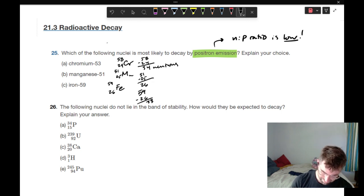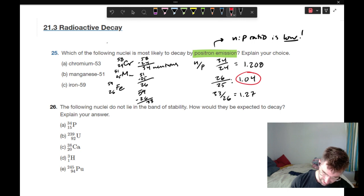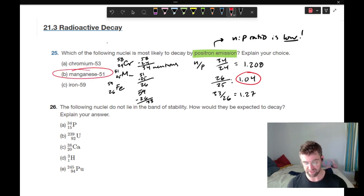This is our neutrons now that we're solving for. And 59 minus 26 equals 33 neutrons. So to figure out our ratio, we simply divide neutrons by protons. So for chromium, we have 34 divided by 24, and that's going to give us about 1.208. For manganese, we've got 26 divided by 25 neutrons by protons, and that gives us 1.04. And here we have for iron 33 by 26 is 1.27. The lowest ratio is for manganese. So manganese-51 is most likely to decay by positron emission. And that is your answer.